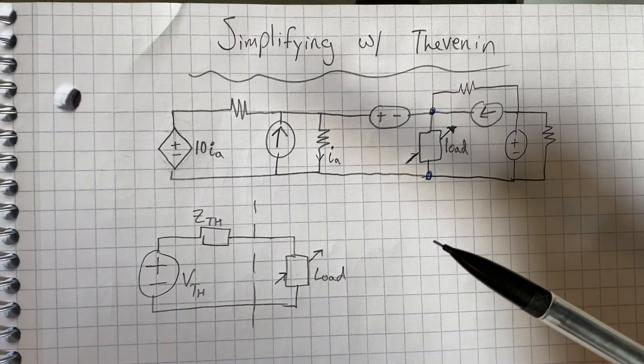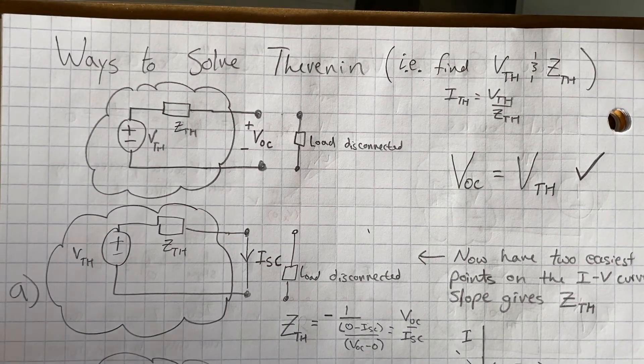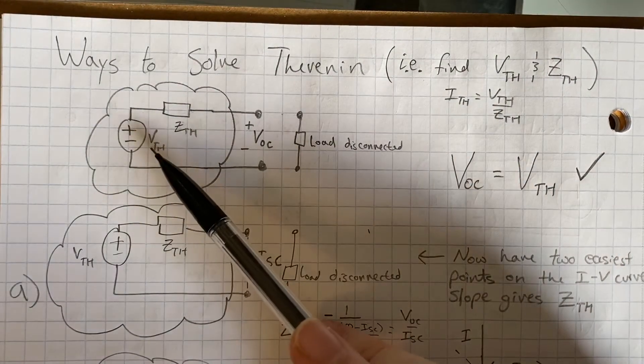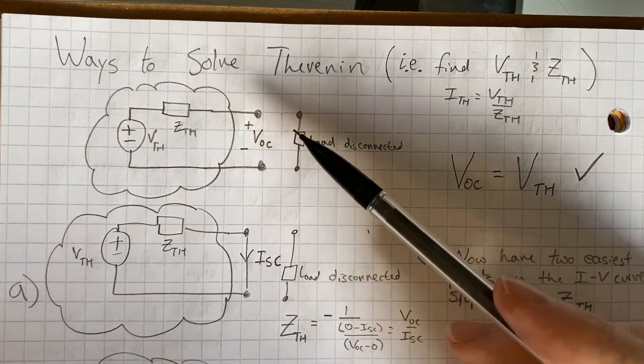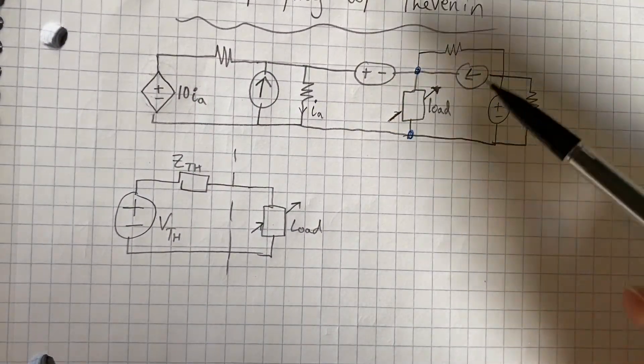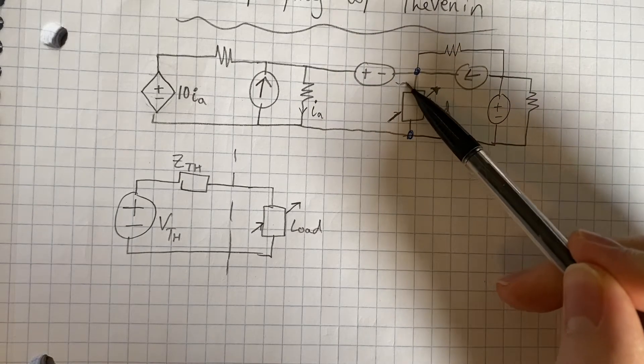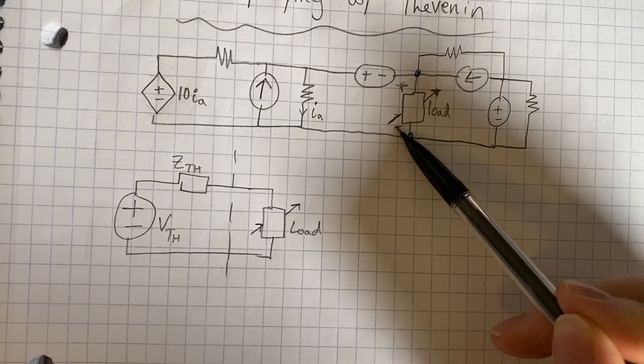There's really only a few ways to solve these Thevenin circuits. So first of all, we want to solve for the Thevenin voltage. And the only way to do that is to just take away the load. So if we were to look at this circuit here, we take this load out of the circuit and find the voltage between these two nodes here. So between this node and ground.